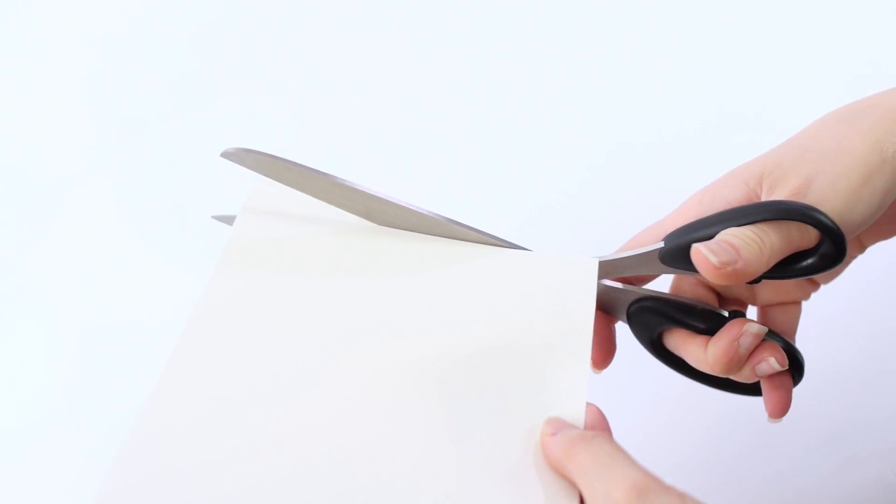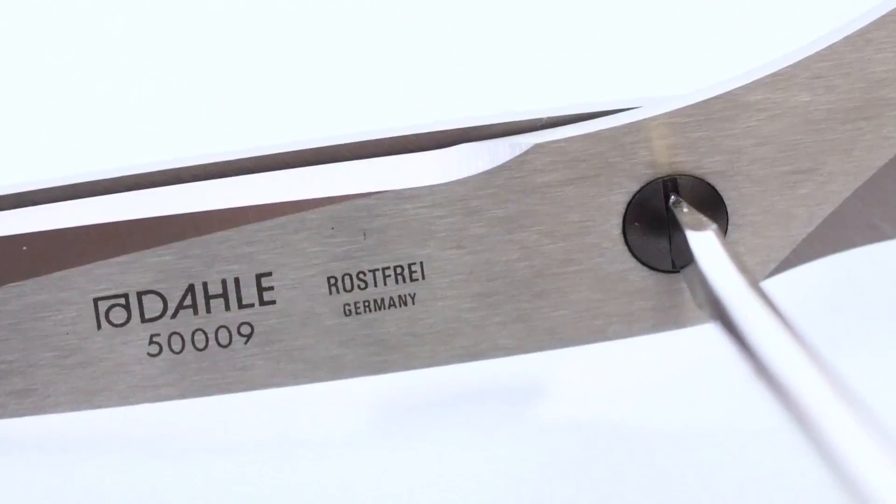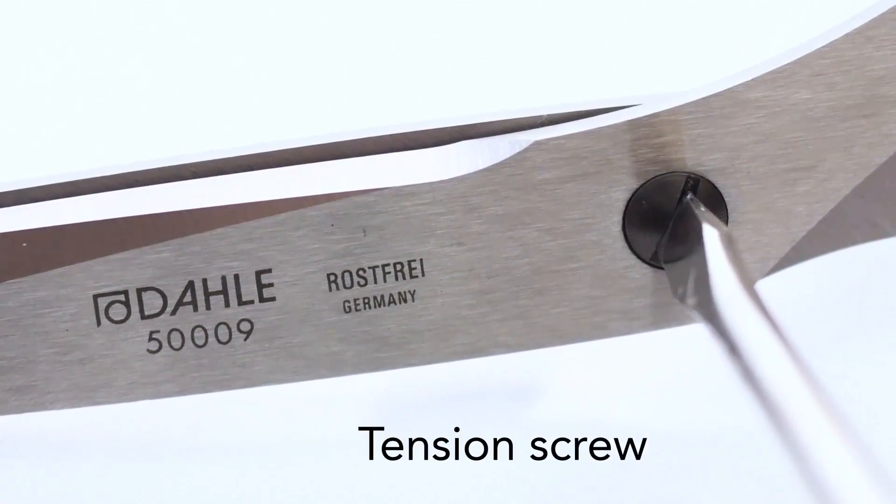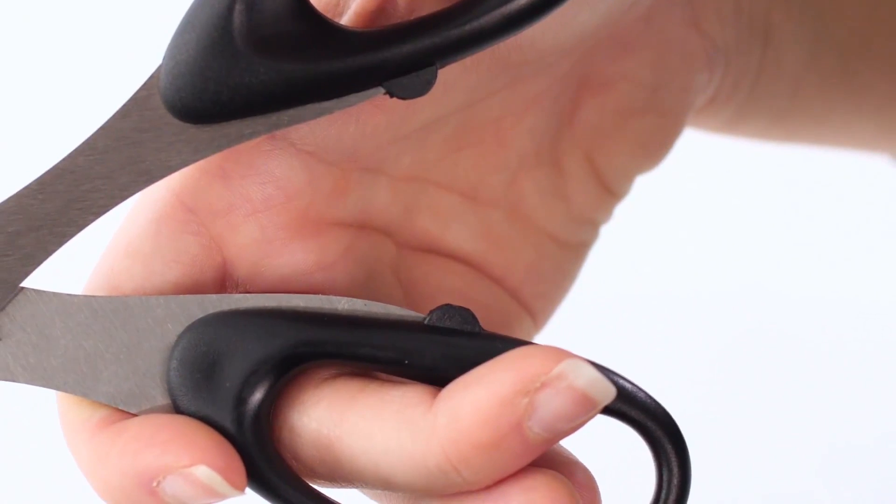To assure a smooth cut, each Super Shears features screw fastened blades. For a slower, more precise cut, increase the tension on the screw. If you prefer a more relaxed cut, it's easy to lessen the tension between the blades.